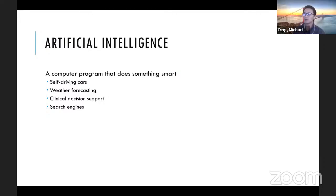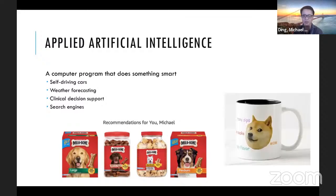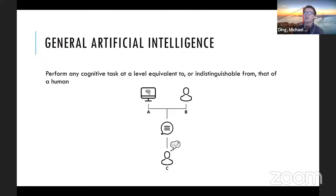A simple, accessible definition of artificial intelligence is: a program that does something smart. That can be almost anything — a program that helps you find your way somewhere, one that determines the chance of rain tomorrow, one that helps a doctor choose a treatment, or a website that tries to sell you things based on past purchases. Amazon recommended dog products to me even though I don't own a dog, so it doesn't always work perfectly.